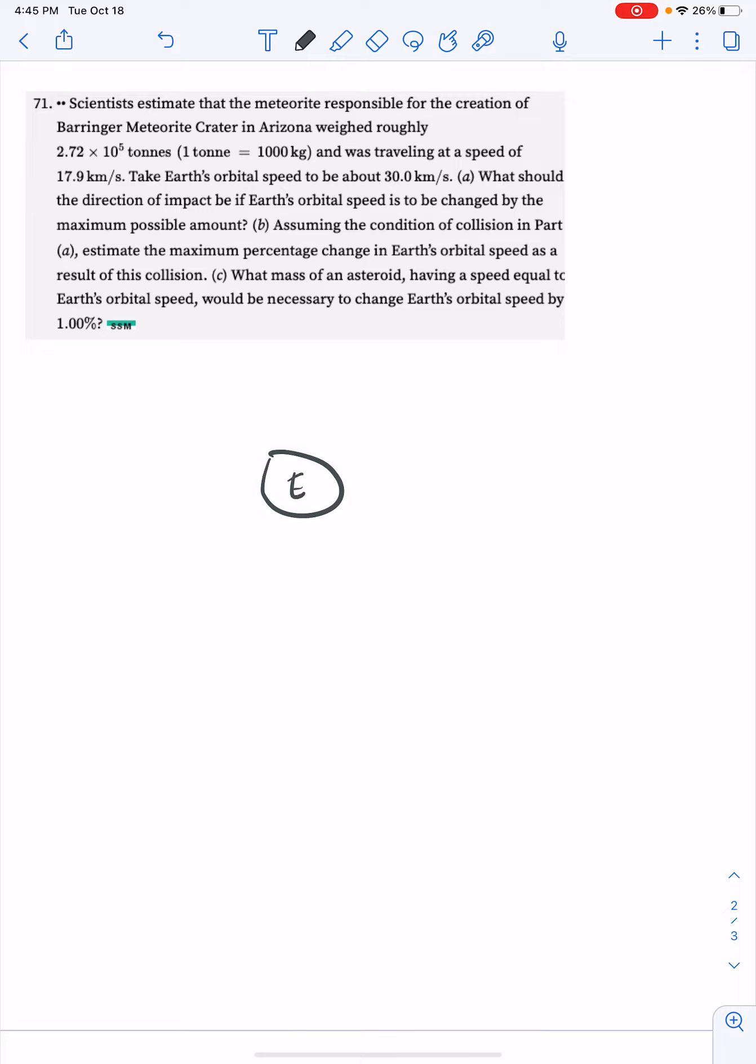The Earth, which has an orbital speed of 30.0 kilometers per second. Assuming its orbit goes something like this, the Sun is over here, and we've got a meteor which I'll put over here for right now that's got a...